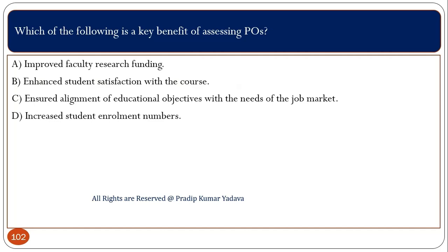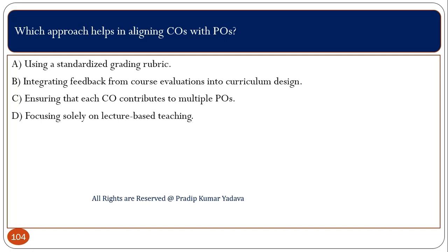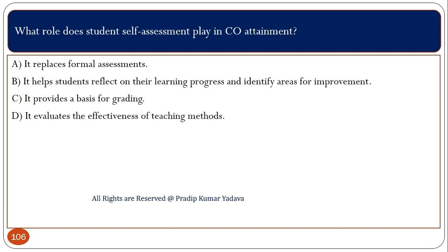Which of the following is a key benefit of assessing PO? Basically, to ensure alignment of educational objectives with the needs of the job market. Which approach helps in aligning COs with POs? The correct option is C: ensuring that each CO contributes to multiple POs. What role does student self-assessment play in CO attainment? Basically, it helps students reflect on their learning process and identify areas for improvement.